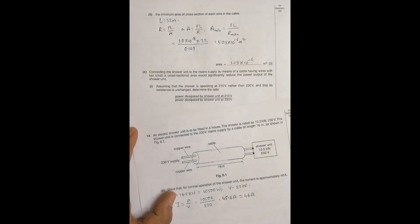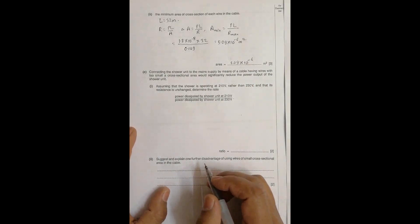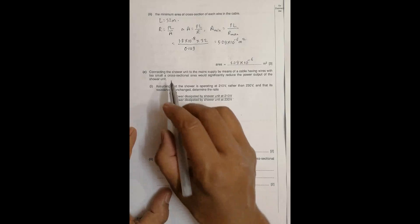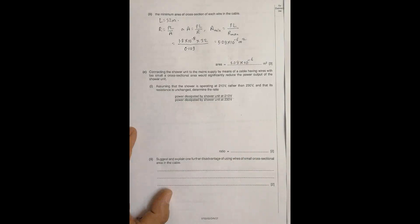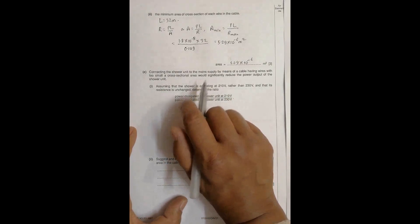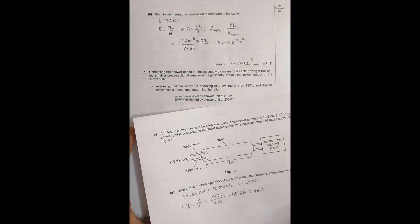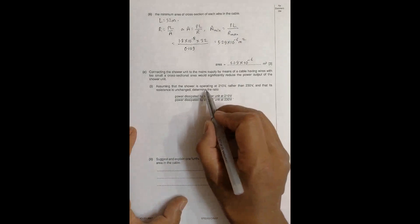Next question: connecting the shower unit to the main supply by means of a cable having wires with too small a cross section would significantly reduce the power output of the shower unit. If the wires have too small cross section, their resistance will be high, so the power loss will be high and it gives less power to this unit.